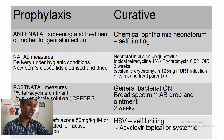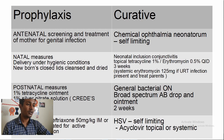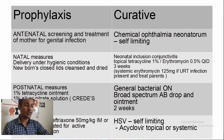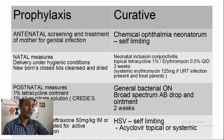Postnatal prophylactic measures include 1% tetracycline ointment, and silver nitrate solution (Crede's method, no longer used). A single injection of ceftriaxone 50mg/kg IM or IV is given if the mother is untreated for active gonococcal infection. For curative treatment: chemical conjunctivitis is self-limiting. Neonatal inclusion conjunctivitis (chlamydial) is treated with topical tetracycline or erythromycin QID for three weeks. Bacterial infections get broad-spectrum antibiotic drops and ointment for two weeks. HSV gets topical and systemic acyclovir antivirals.